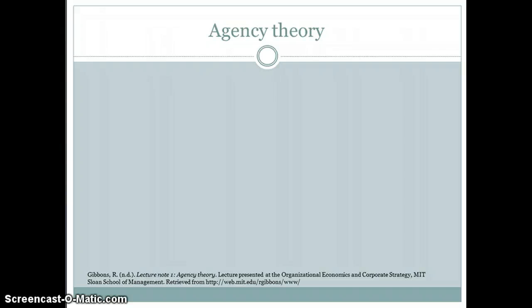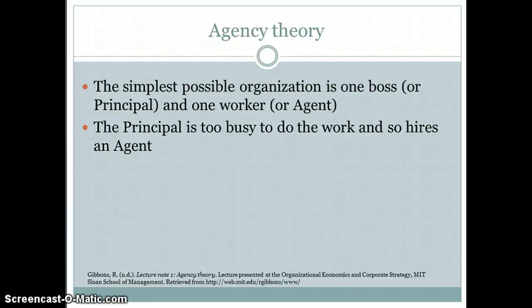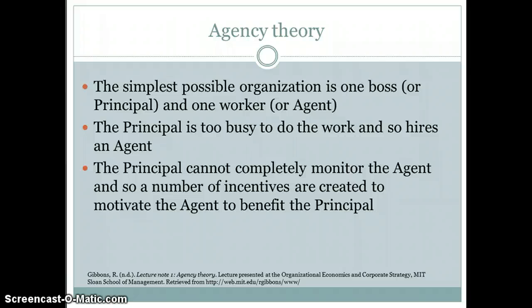Agency theory is probably the simplest organizational theory studied. It starts with one boss — one person starting a company or working in a field — and one worker. As the work gets more and more and they get busier and busier, the principal is too busy to do the work and so he hires an agent. However, once you hire someone else, that principal cannot completely monitor the agent, and so he has to come up with incentives to motivate the agent to benefit the principal.